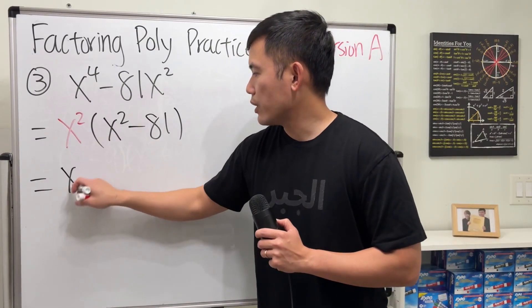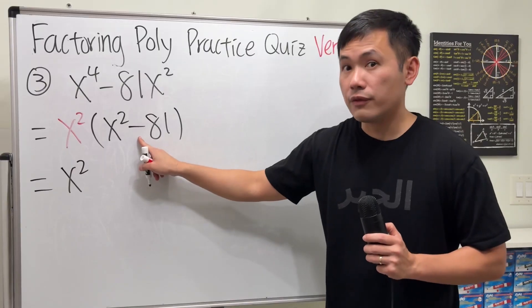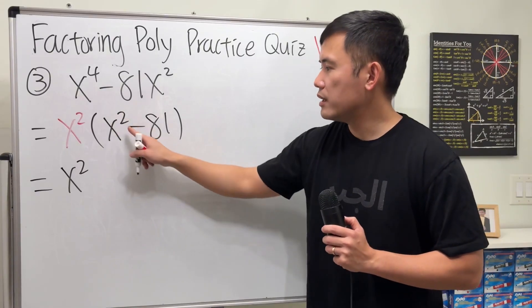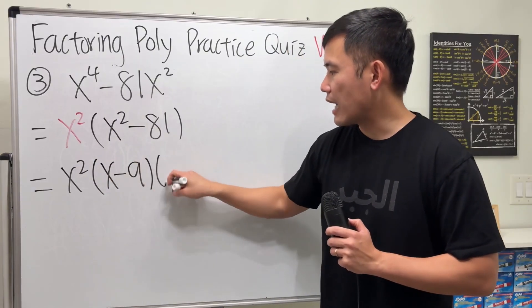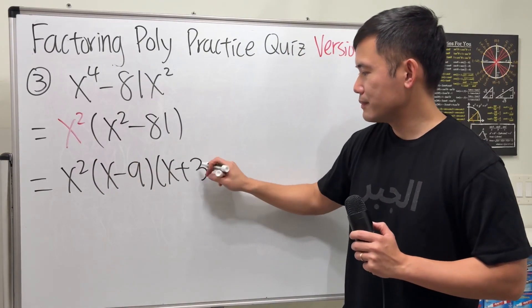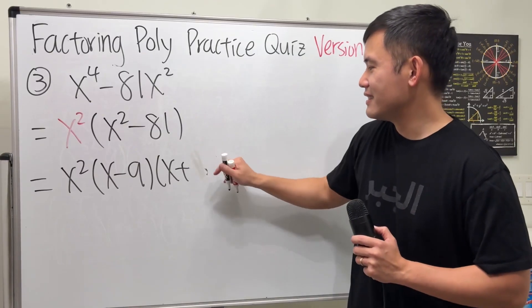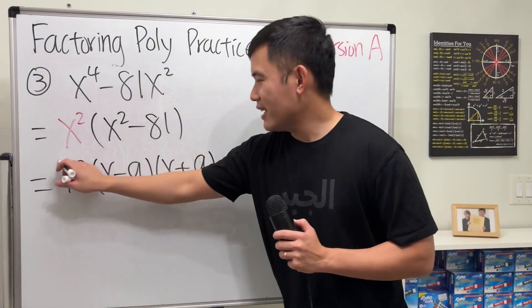This is x squared. This is a difference of two squares, x squared minus 9 squared, so we can factor this right here, and get x minus 9, times x plus 9, just kidding, plus 9. And then we're done.